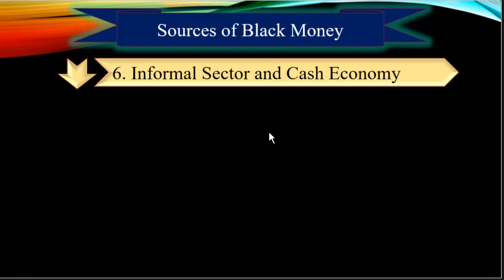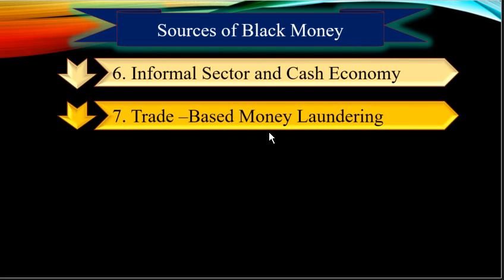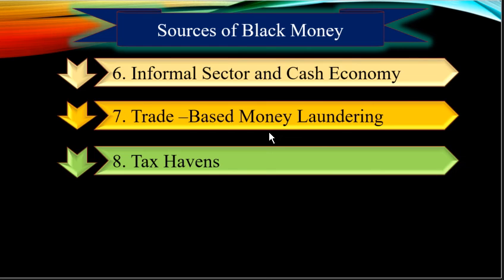Next source is the informal sector and cash economy — large unbanked and underbanked areas contribute to the large cash economy in India. Next is trade-based money laundering, which involves disguising the proceeds of crime and moving value through the use of trade transactions in an attempt to legitimize their illicit origins.